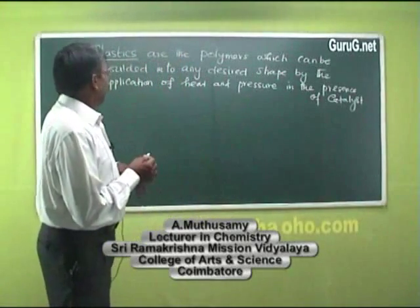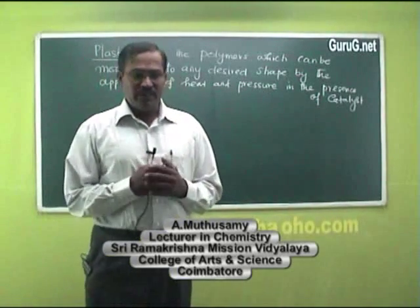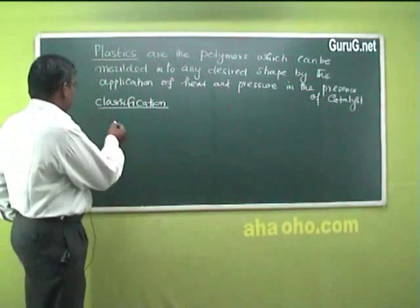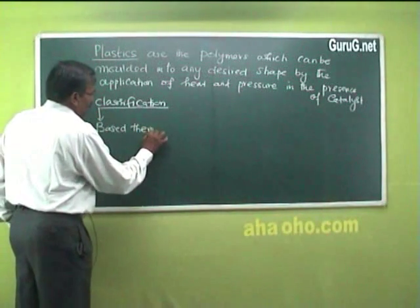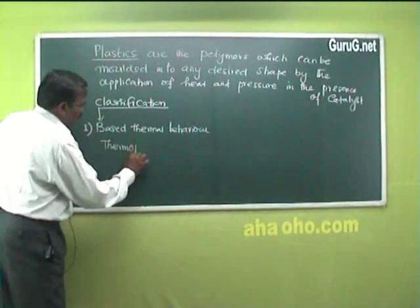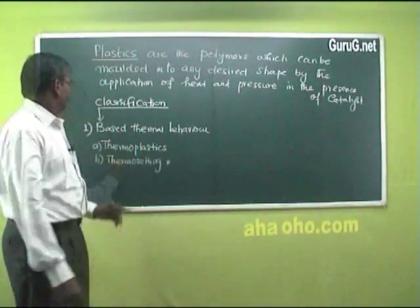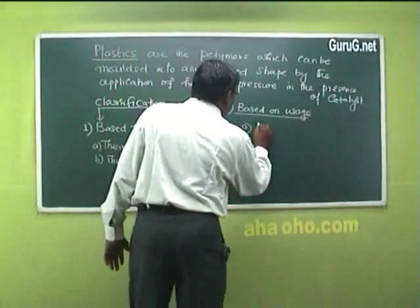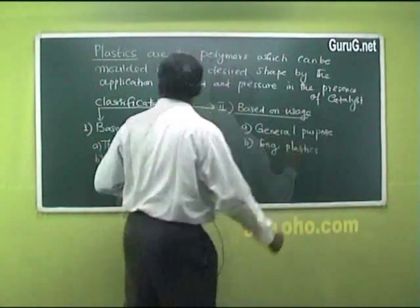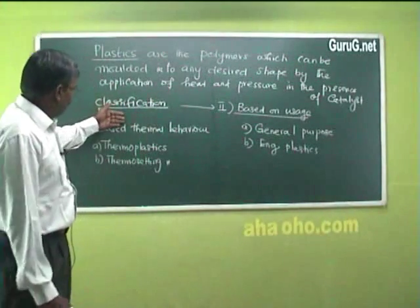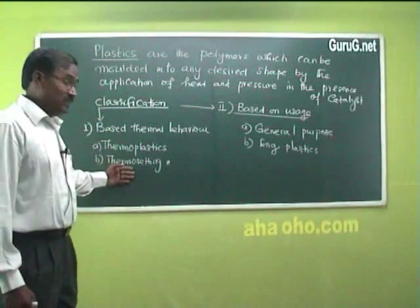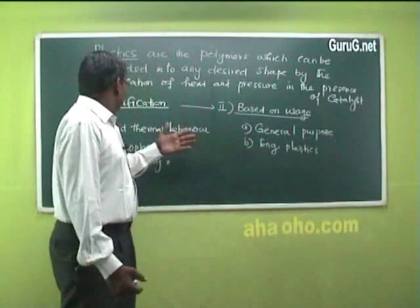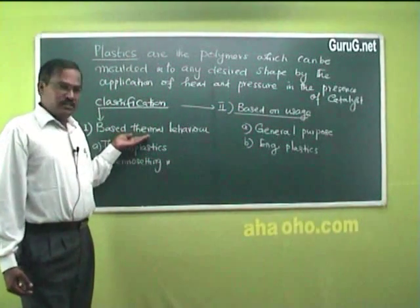Plastics can be classified into various categories on the basis of two main aspects. The first is based on thermal behavior, classified into thermoplastics and thermosetting plastics. The second aspect is based on usage, classified into general purpose plastics and engineering plastics. Let us first concentrate on plastics classified on the basis of thermal behavior.